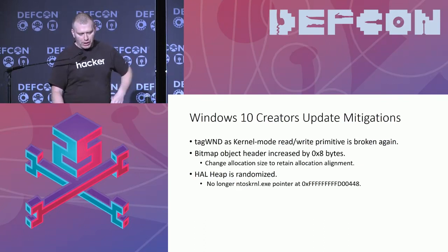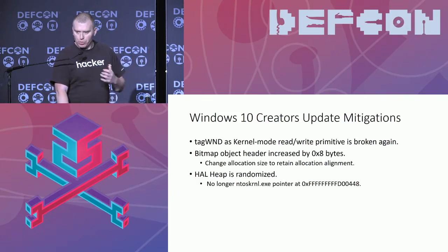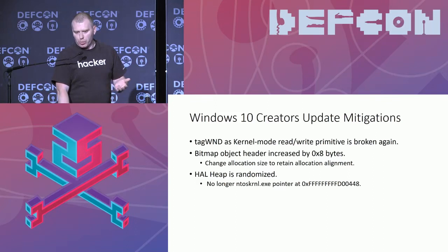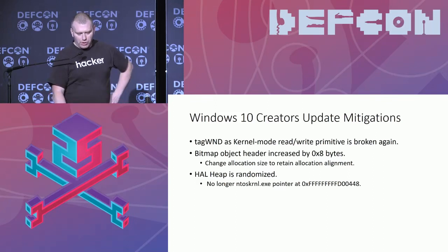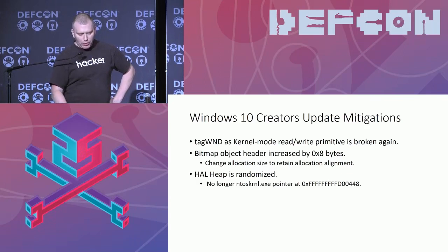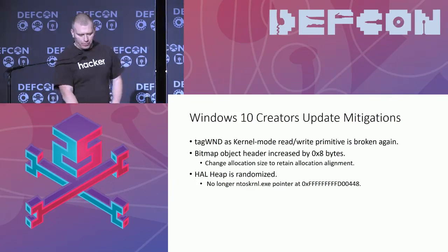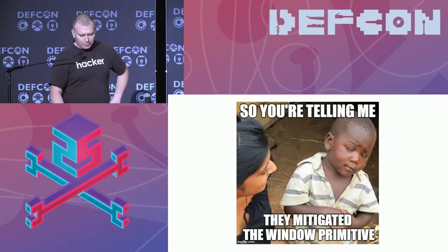Some additional changes: the size of the bitmap object header is increased. This doesn't break the primitive but we need to make sure we change the size so that allocation alignment still works. And now the HAL heap is also randomized, so we don't know where the NT pointer is anymore.